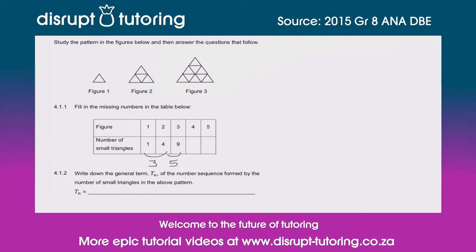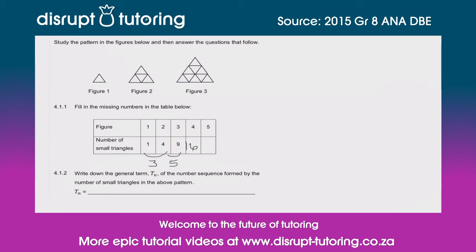If you've done your practice and looked at special sequences, an alarm bell should ring — this is a special sequence. What do we notice about these numbers? From a figure perspective: one times one is one, two times two is four, three times three is nine, four times four is 16, and five times five must be 25. So that gets you those two marks — it's identifying the special sequence you see in the shapes.